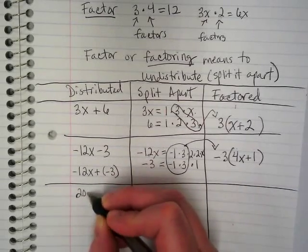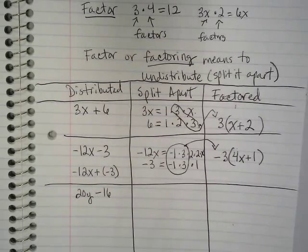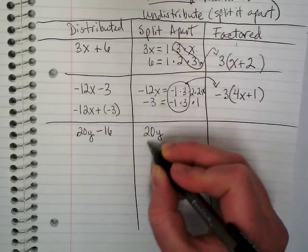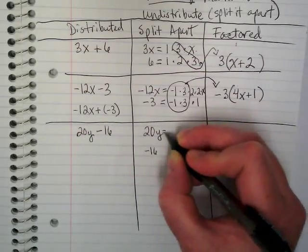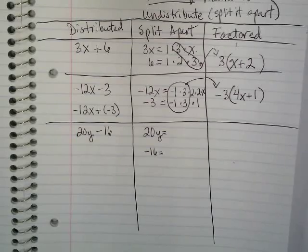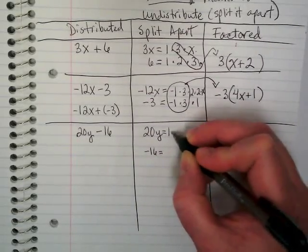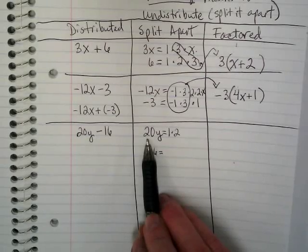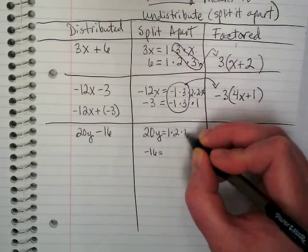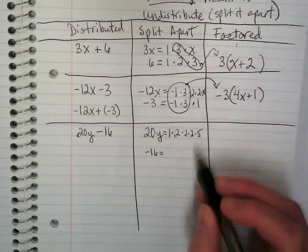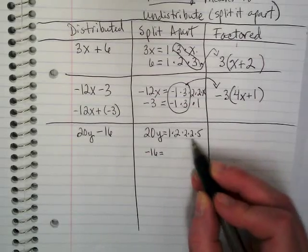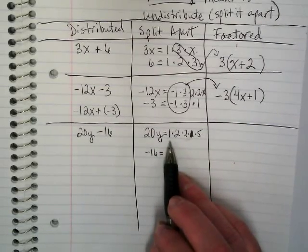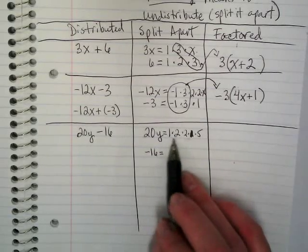How about this one? 20y minus 16. We're going to break 20y and negative 16 into its parts. We have to think about all the prime numbers that can multiply to get 20. Well, we have 1 times 2. That leaves 10 because 2 times 10 gets this, but 10 is not prime. So I want to break that down to be 2 times 2 times 5. So 1 times 2 is 2, 2 times 2 is 4, 4 times 5 is 20.